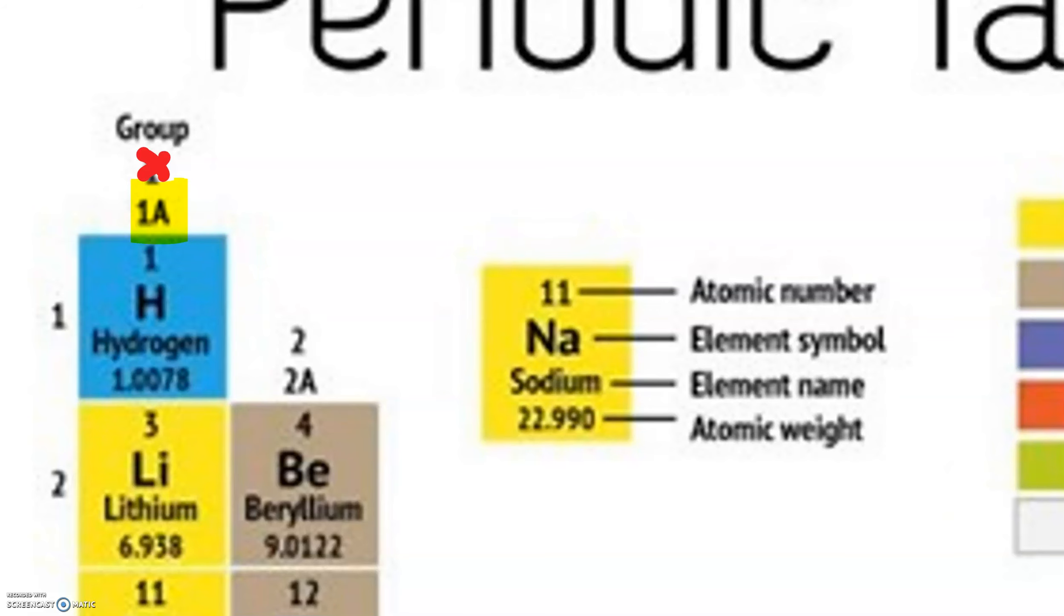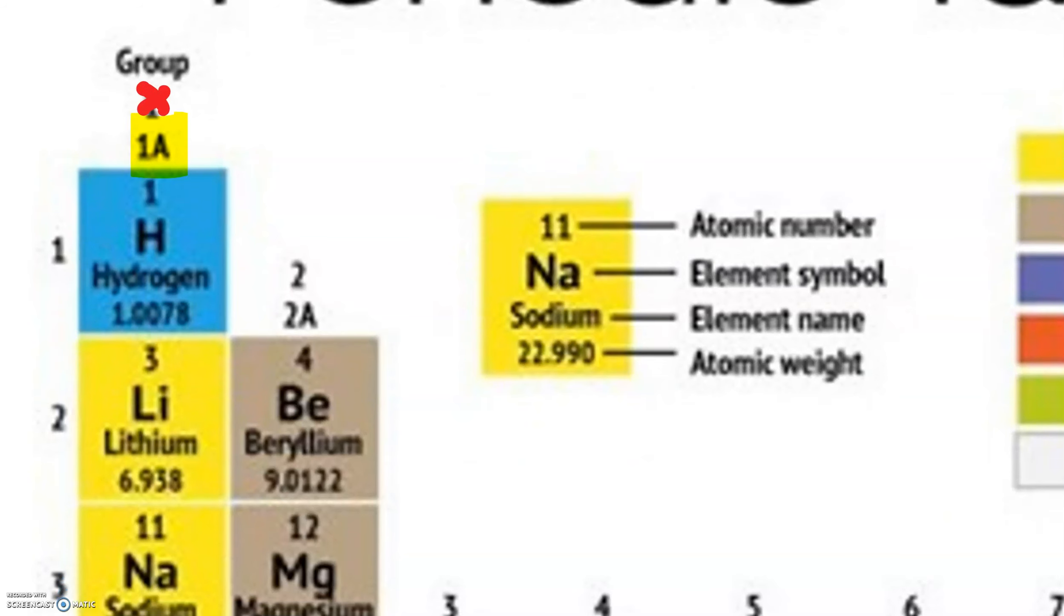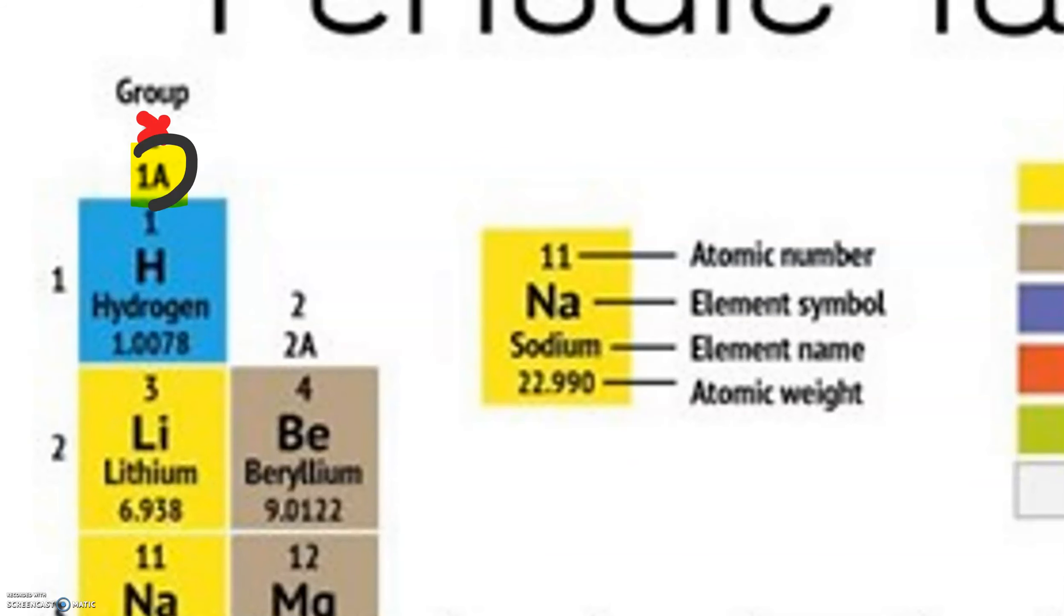Everything that's in group one—hydrogen, lithium, sodium—they all have one valence electron. Everything that's in group two has two.